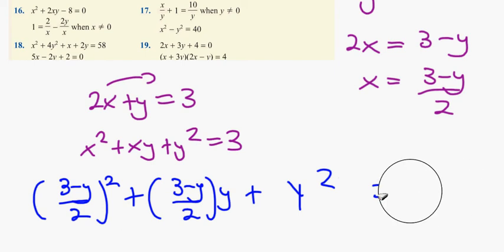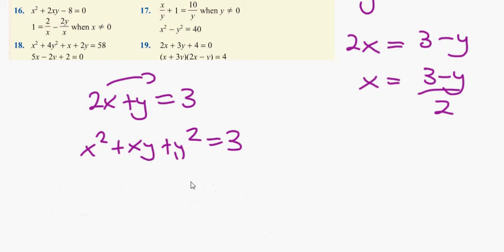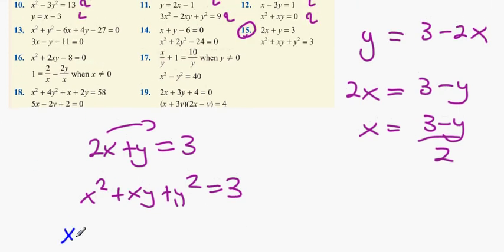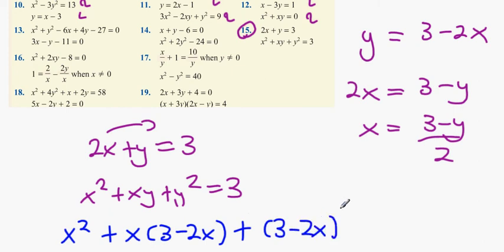Instead of using x, I'm going to substitute in for y. So instead of that formula, I'm going to have this. x squared plus x times 3 minus 2x plus 3 minus 2x squared equals 3. I'm going to stop there. There's a big difference there, isn't there, in how you choose.